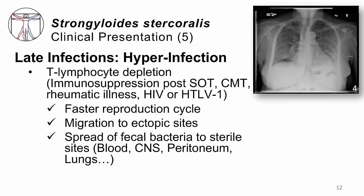Hyperinfection happens when immunosuppression is very heavy. This could be after solid organ transplantation, after chemotherapy for cancer, in a patient who has rheumatic illness and needs corticosteroids, or someone with uncontrolled HIV or human T-lymphotropic virus. What happens here is that the worms reproduce faster, and they can also migrate out of the gut, out of the lungs, to other ectopic sites — the brain, the spleen, the skin, the eyeballs, the liver — everywhere.